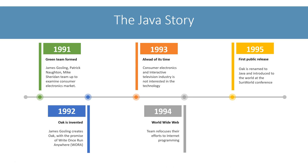That's a quick look at Java's story, starting from its humble beginnings to the juggernaut it has become today. In the next video, let's take a closer look at platform independence and try to understand how Java changed the game with its write-once-run-anywhere promise.